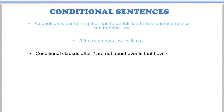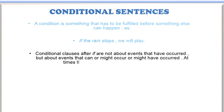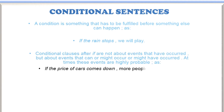Conditional clauses after 'if' are not about events that have occurred, but about events that can or might occur, or might have occurred. At times, these events are highly probable. The main clauses — the clauses after the if clause — have a variety. Like: if the price of cars comes down, more people will buy them. Here you can see the high probability of something happening. So there is a variety of main clauses after if clauses.